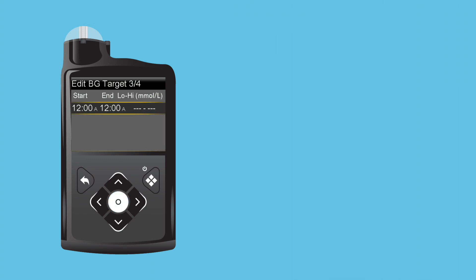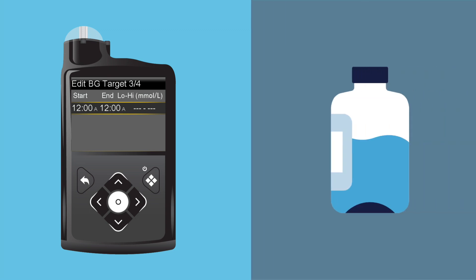Andy sees BG Target Range is Next. This range is used to calculate correction Boluses. He selects Next and selects the time segment. Since Andy is only setting one range, he presses Select again. Using the arrows, he sets his low and high values, pressing Select after each entry. He selects Next.